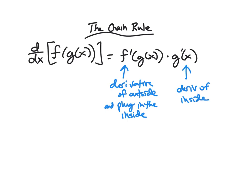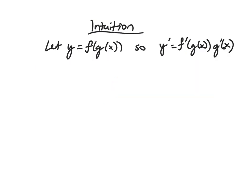Why does this even work? Why is this true? Let's get some intuition for what's going on here. I'm going to let y be f of g of x, so by the chain rule, y prime is f prime of g of x times g prime of x. Here I'm just going to call the inside u, so u is g of x and y is f of u. This lets me lump the whole inside and call it u.